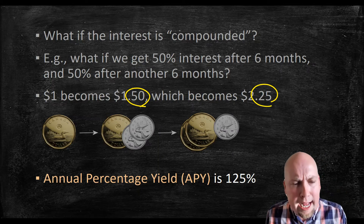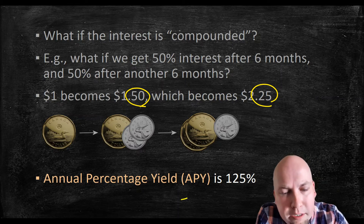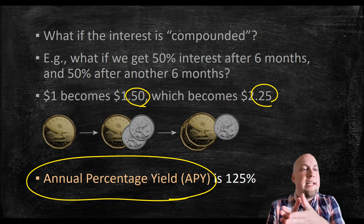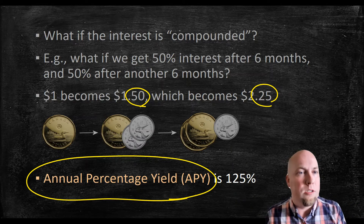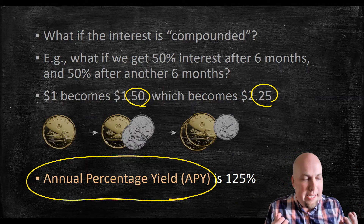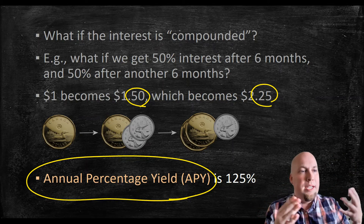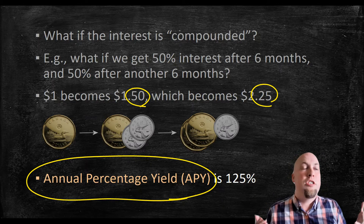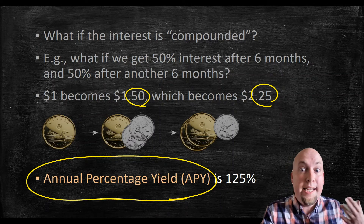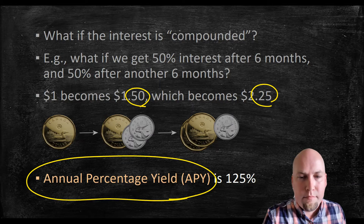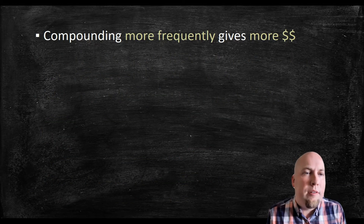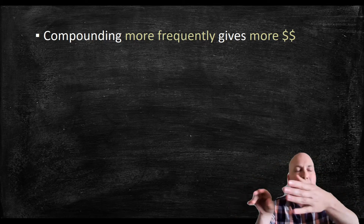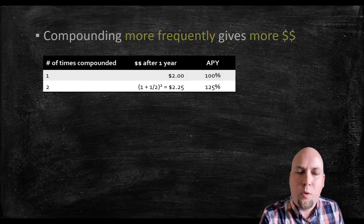This leads to the concept of APY — annual percentage yield — as opposed to APR. The APY is how much interest you actually get after a year when you take compounding into account. Banks might give you interest not just at the end of the year, but twice a year, four times a year, or most commonly 12 times a year. Compounding more frequently gives you more money because you get more interest on interest — the earlier you get interest, the sooner it can start building on itself.